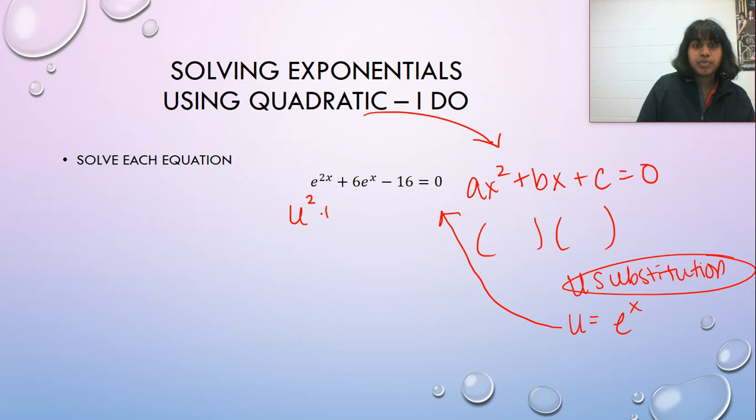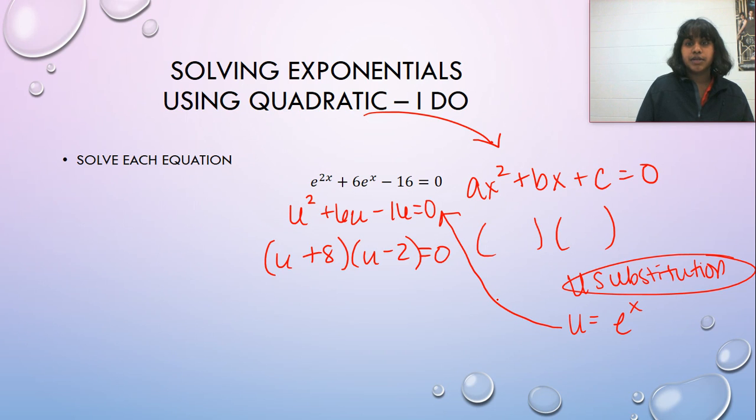But don't forget the squared, plus six times, instead of E to the X, U, minus 16 equals zero. Hey, that's really easily factorable. That becomes U plus eight times U minus two equals zero. Well, if I bring this back into both of these spots, I actually end up with E to the X plus eight times E to the X minus two equals zero. I can solve for both of those on each side.